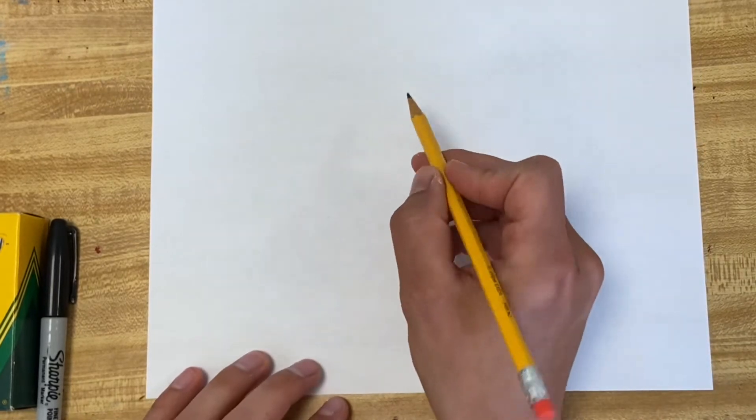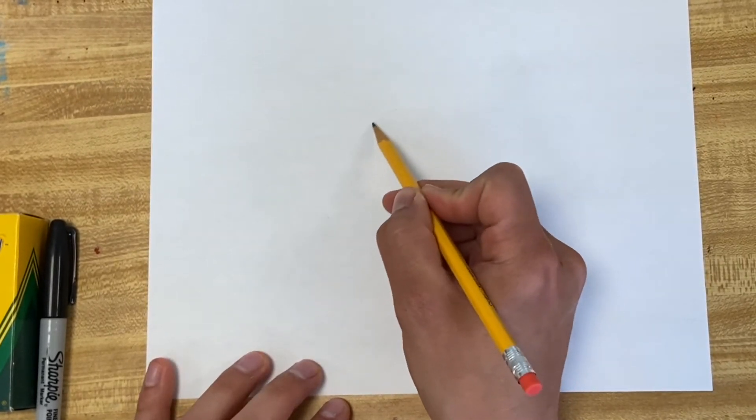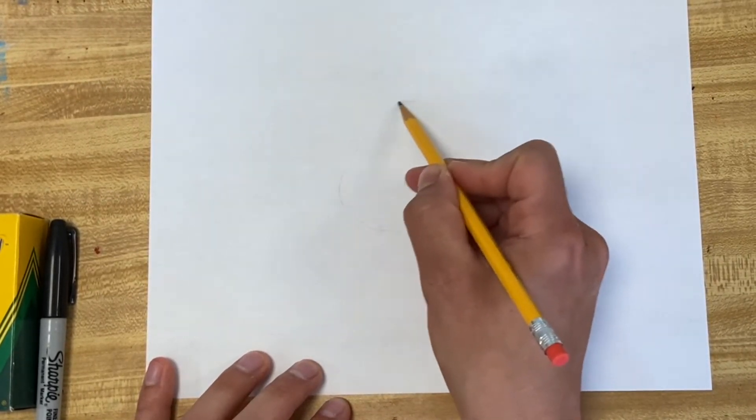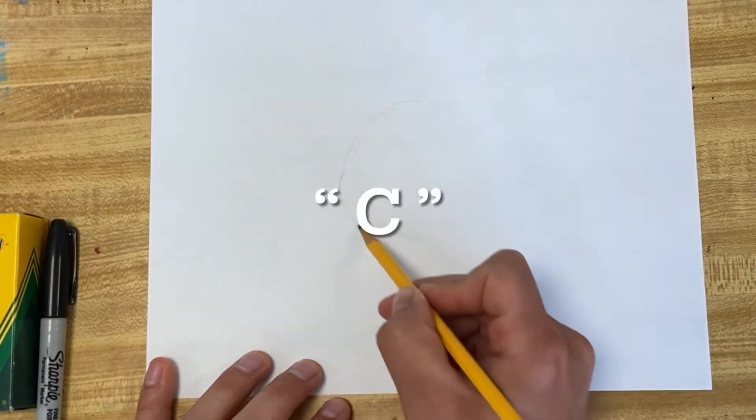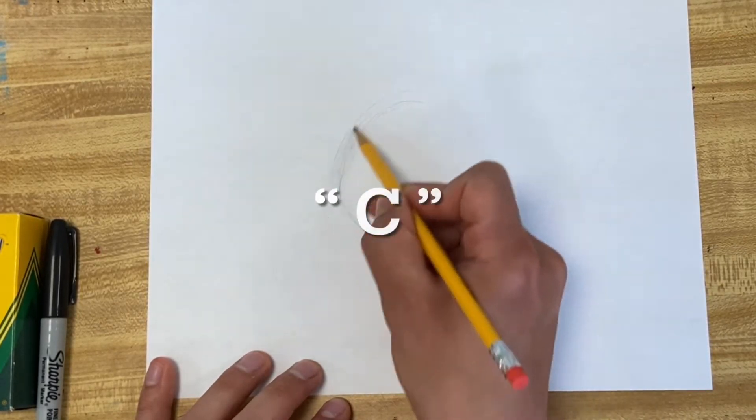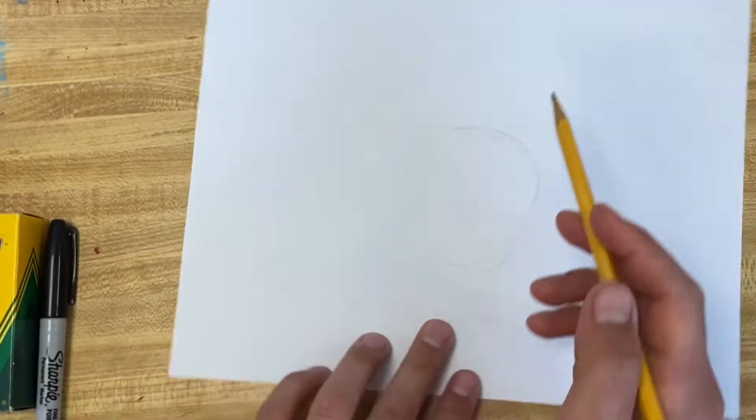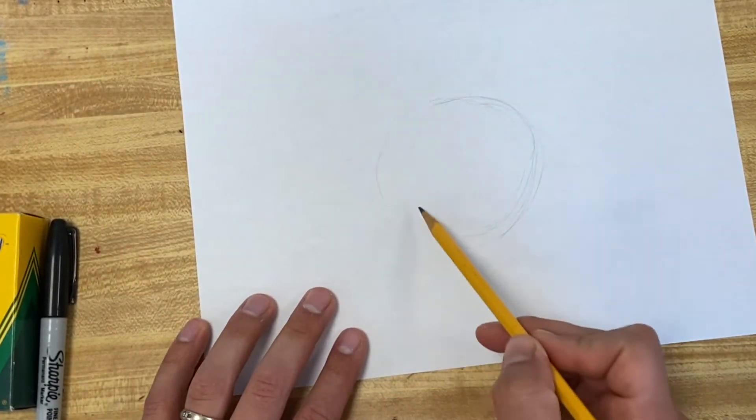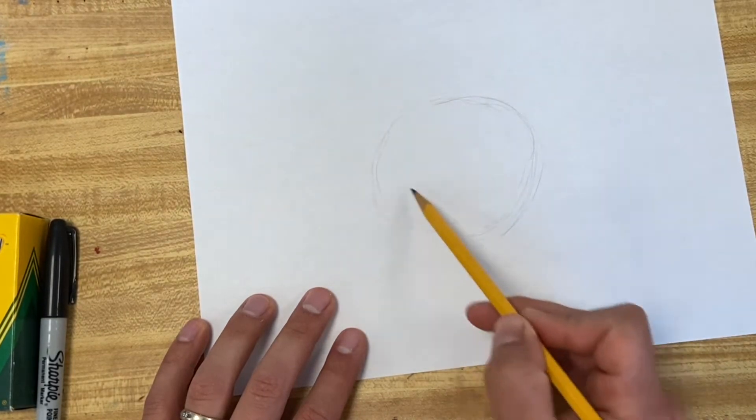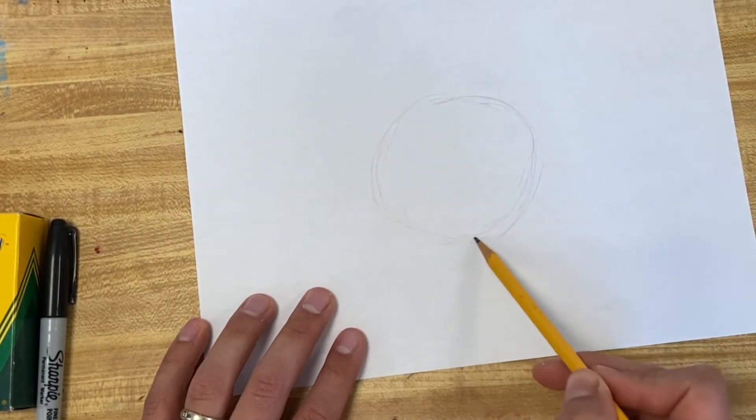I'm going to do my little circle hack of doing a C on one side, so kind of a half circle or a C shape. I start out really lightly, hold my pencil back a little bit, and then I'm going to flip my paper around and do a C on the other side to shape out the rest of that circle.